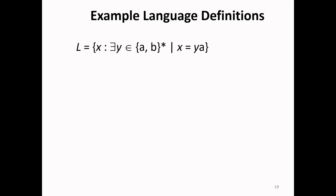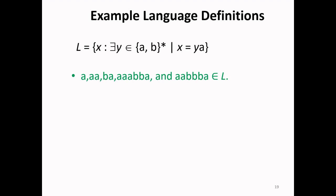Take one more example: L equals all possible strings X such that for some Y belonging to AB*, X equals YA — that is, X is Y concatenated with A. Y can be epsilon followed by A, so the first string is A. Y is A concatenated with A gives AA. Next, Y is a single B concatenated with A, so BA belongs to this language.